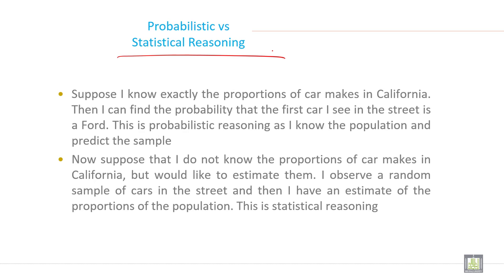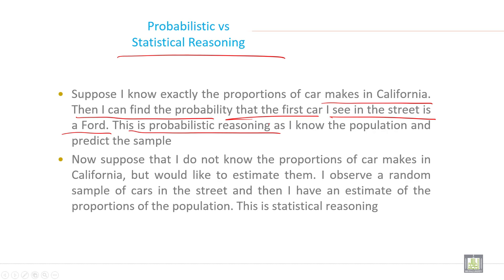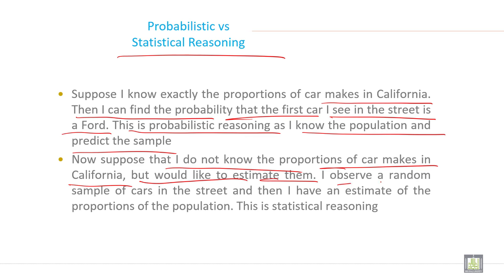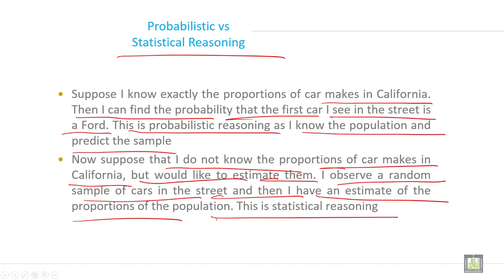Now, probability versus statistical reasoning. Suppose I know exactly the proportion of car market in California. Then I can find the probability that the first car I see in the street is a Ford. This is probabilistic reasoning — I know the population and predict the sample. Now suppose I do not know the proportion of car makes in California, but I would like to estimate them. I observe a random sample of cars in the street and then I have an estimate of the proportion of the population. This is called statistical reasoning.